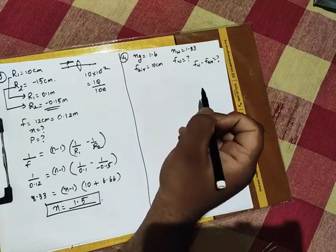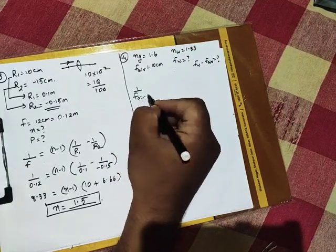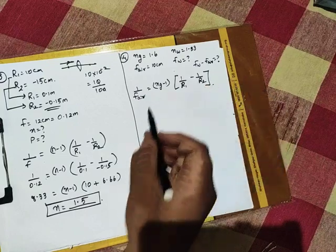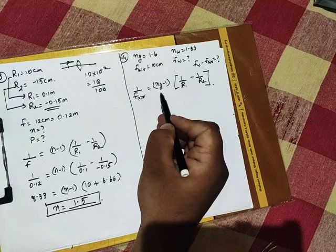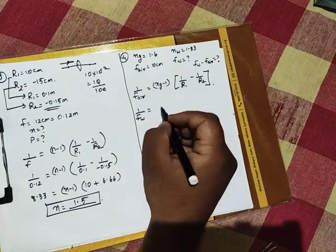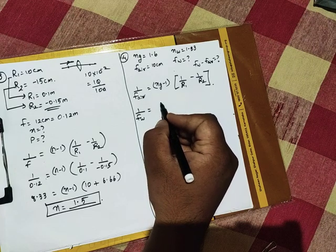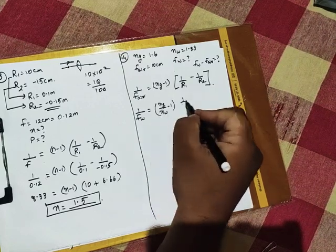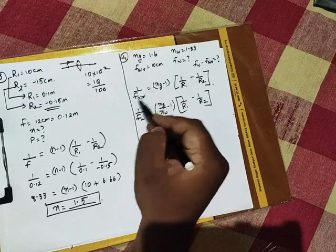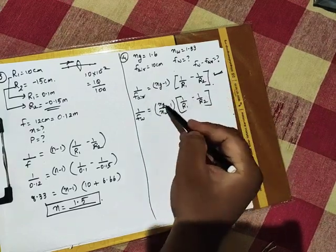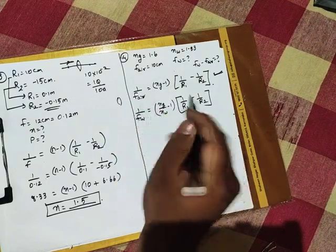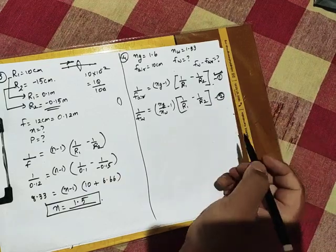Simple formula: 1 by f in air equals ng minus 1, 1 by r1 minus 1 by r2. I have told you that ng by na, na is 1, refractive index of air is 1, I have just left ng. If second case water: 1 by fw equals ng by nw, 1 by r1 minus 1 by r2. Why are r1 and r2 the same? Lens ko badlaya nahi gaya hai. Same lens in air, then in water. Radii of curvature doesn't change.